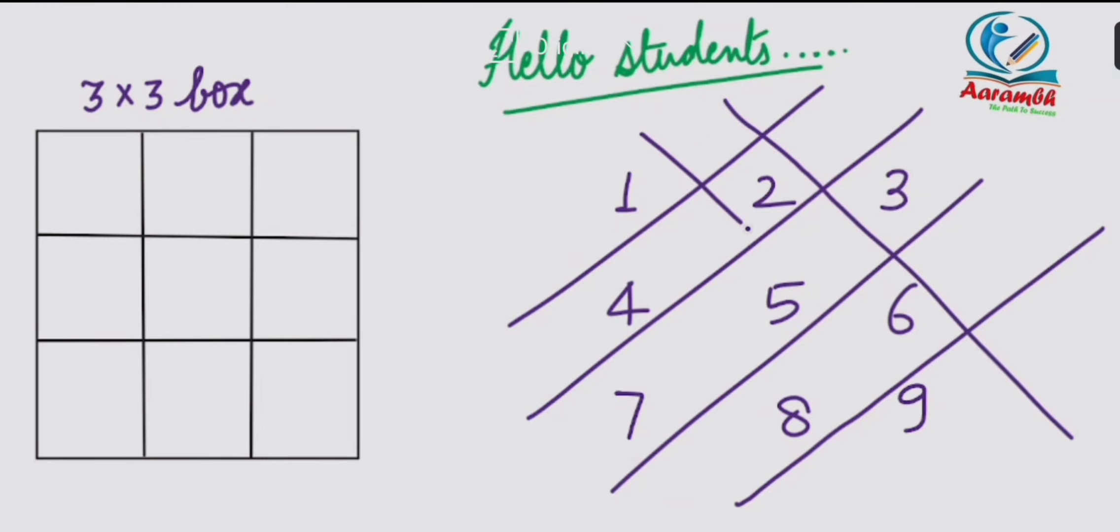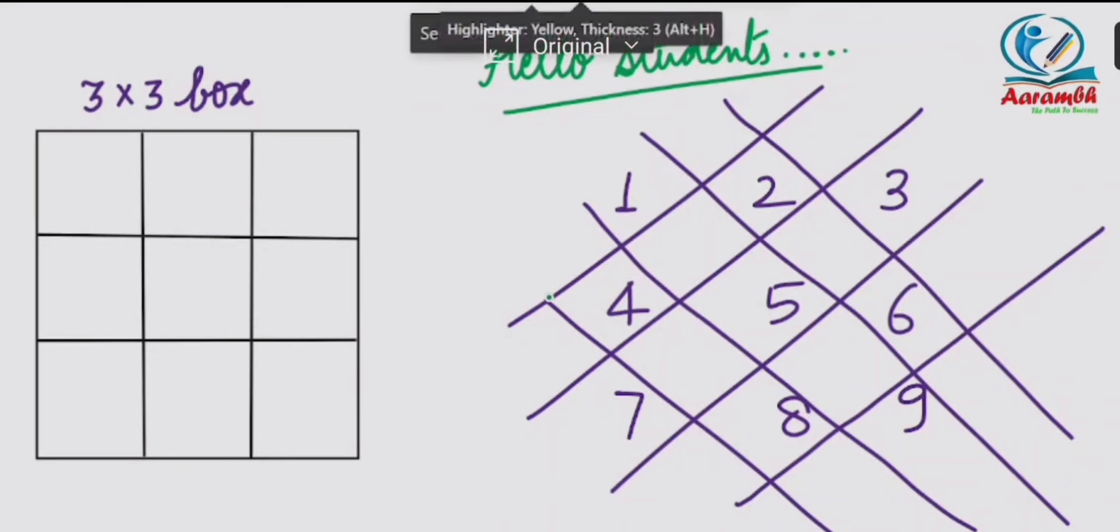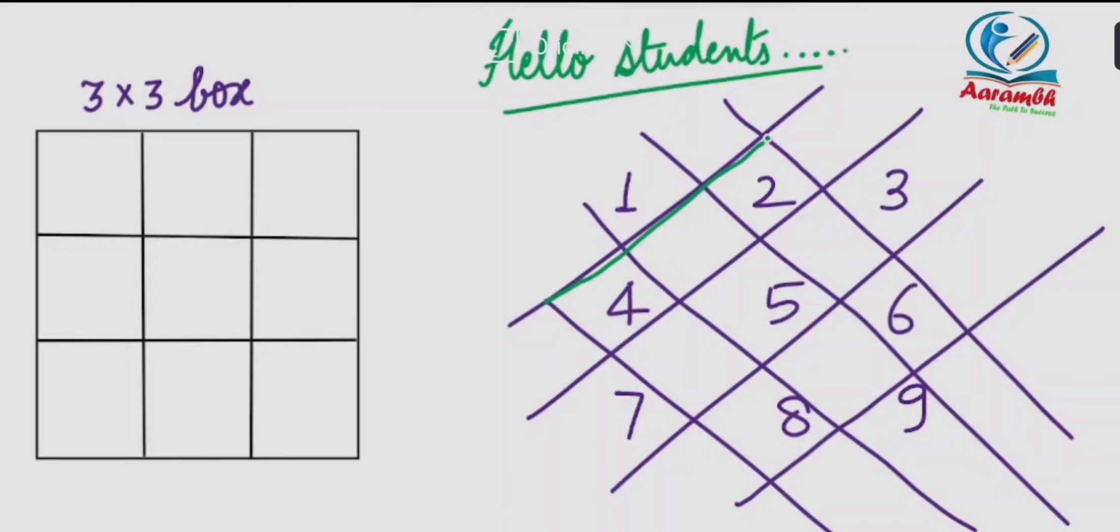We will notice that the 3 by 3 box is drawn, but what is it? 1, 2, 3, 4 - these 4 boxes are blank.